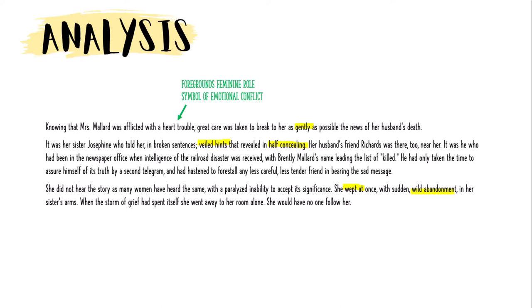Another thing going on in this section is when we're told that 'she did not hear the story as many women have heard the same, with a paralyzed inability to accept its insignificance.' Now there are multiple interpretations. First, the use of a third-person narrator is allowing us to understand Mrs. Mallard in comparison to wider society. And that sentence foregrounds how she is different from other women.